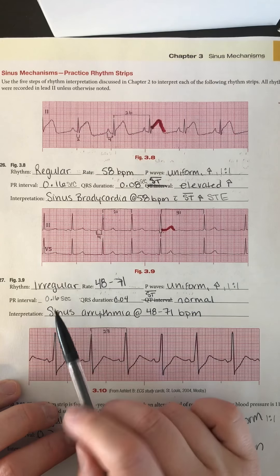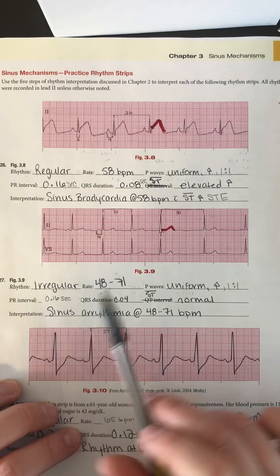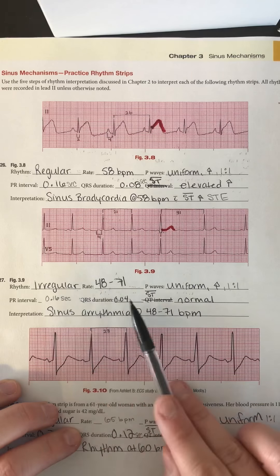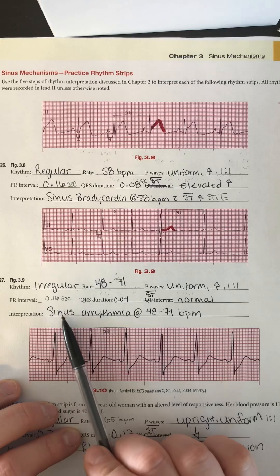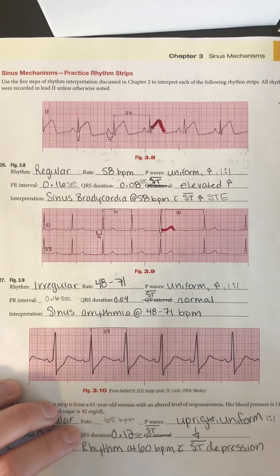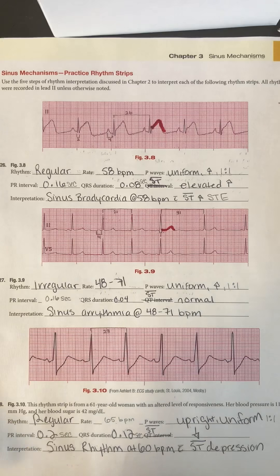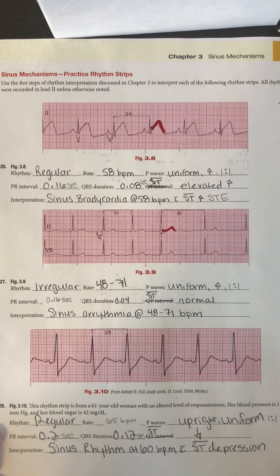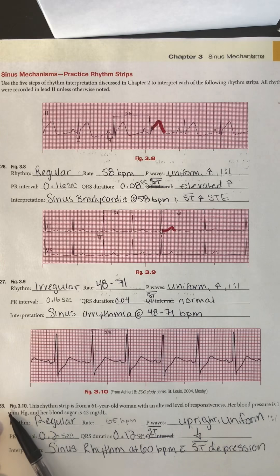Because it is irregular but sinus — P waves for every QRS, everything within normal limits — this is a sinus arrhythmia at 48 to 71 beats per minute. I don't need to note anything about the ST segment because it's normal.